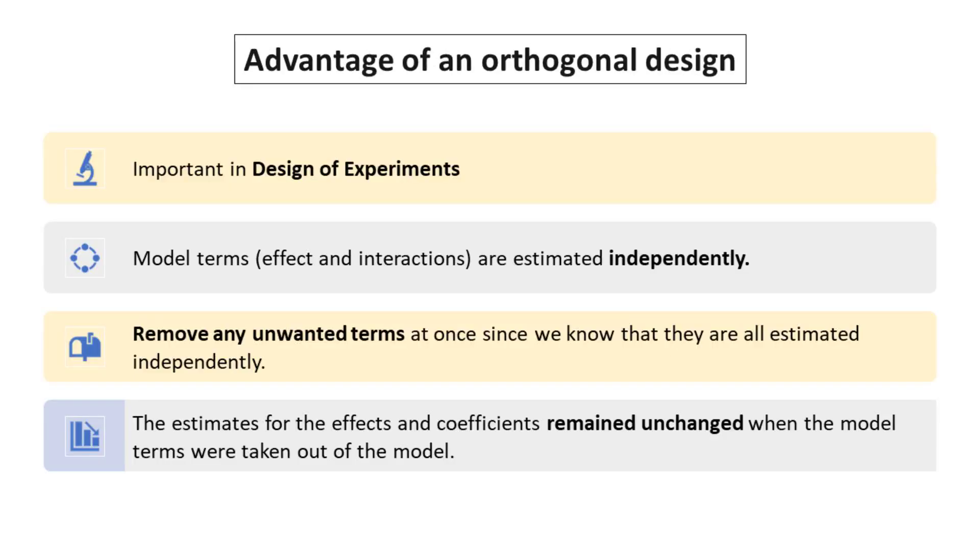Advantage of an orthogonal design: An orthogonal design offers a unique advantage in the field of research and experimentation. Firstly, model terms such as effect and interactions are estimated independently. When we consider the effects of model terms, we are looking at the impact that each individual term has on the overall outcome. By understanding these effects, we can better assess the significance of each term and its contribution to the larger picture.